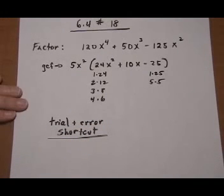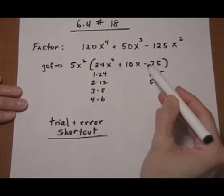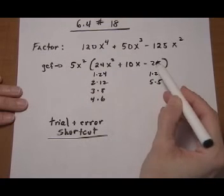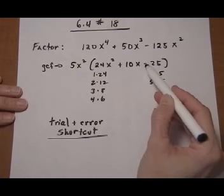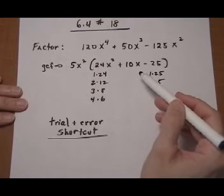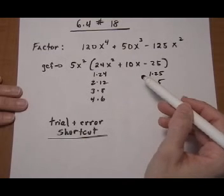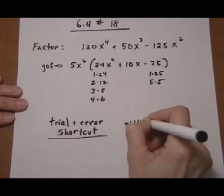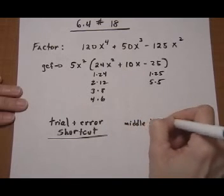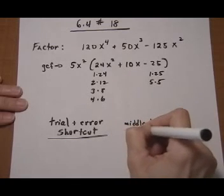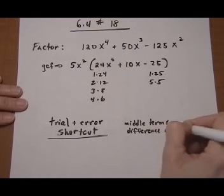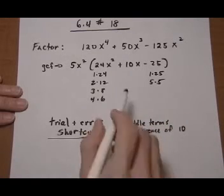And what I do for the shortcut is I first notice that this is a minus sign at the end. So the middle terms, the factors for the last term are going to be opposite signs to give a minus. That means the middle terms, when they combine, are going to be different signs. They're going to tend to cancel each other out. So the middle terms are going to have a difference of ten. And it's going to be a positive ten difference.